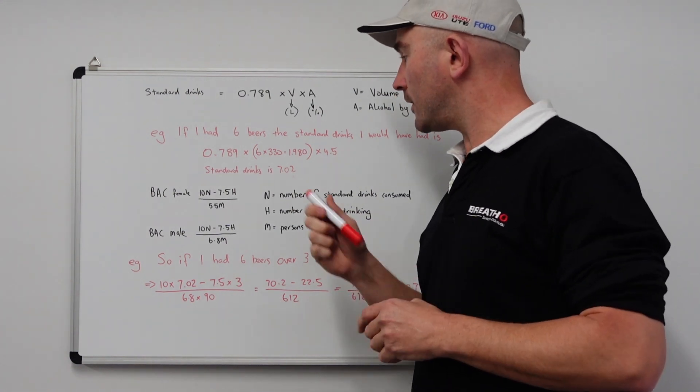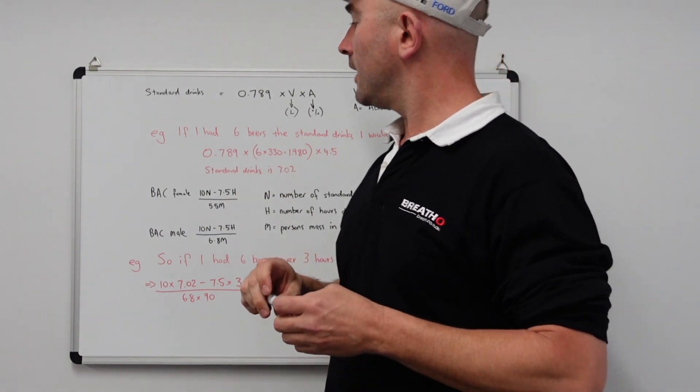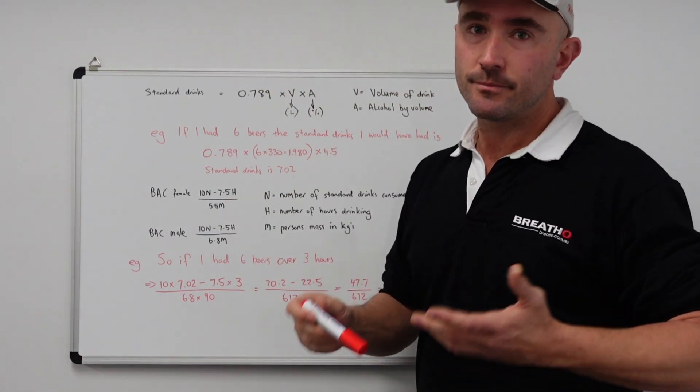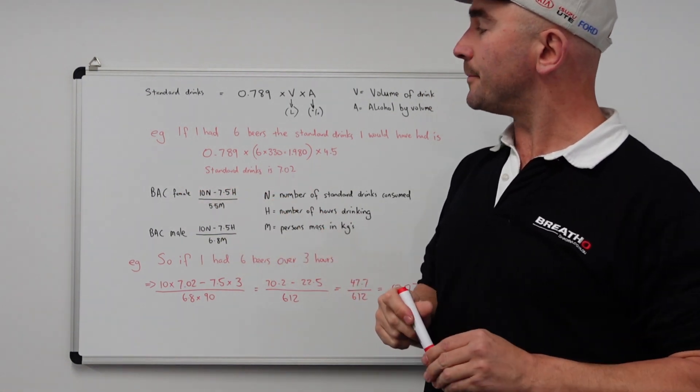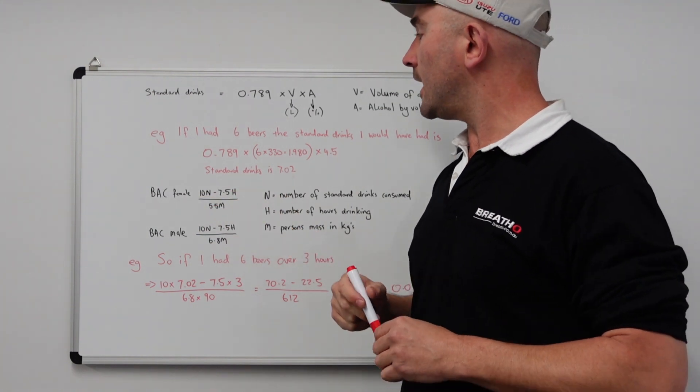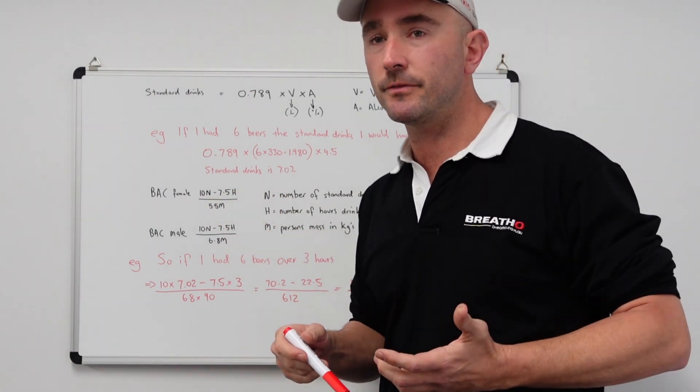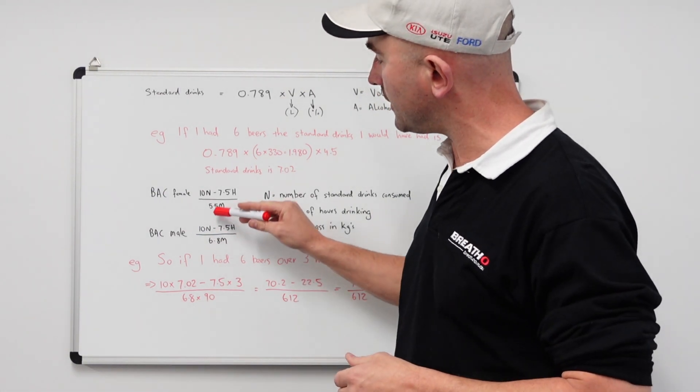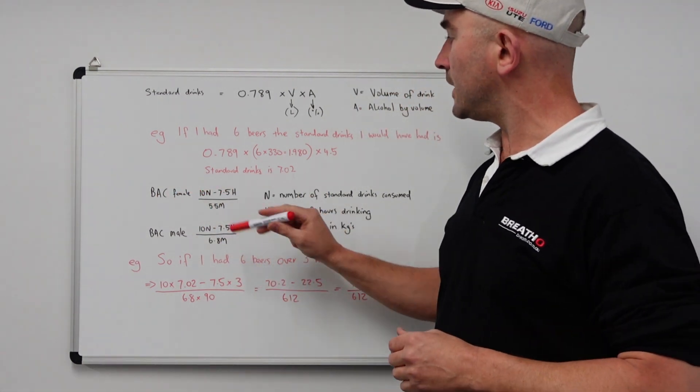Now this is an interesting number because now we can work out our blood alcohol content estimate through these two formulas here. Now there's two because one is female and one is male. They're different because males process alcohol a little bit quicker than females. That's why you'll have two different numbers here.